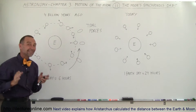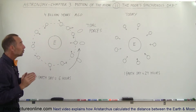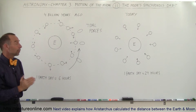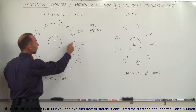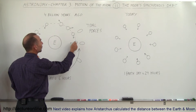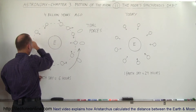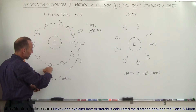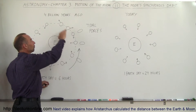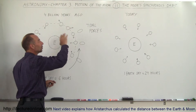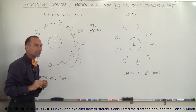So you can see the same part of the Moon is not always visible — here the front side of the Moon is visible, then the back side, back to the front side, back to the back side, and so forth as it goes around.